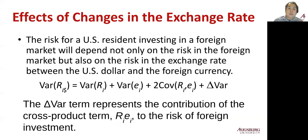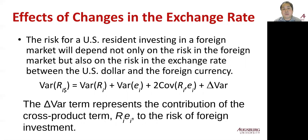What about the variance — the risk? The risk for a US resident investing in a foreign market depends not only on the risk of the foreign market, but also on the risk of exchange rate changes between the US dollar and the foreign currency. The variance for the US resident equals the variance of the return in foreign currency, plus the variance of the exchange rate changes, plus two times the covariance of RI and EI, plus a delta VAR term. This last term represents the contribution of the cross product terms RI times EI to the risk of foreign investment.